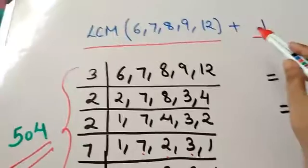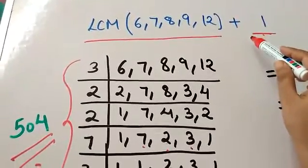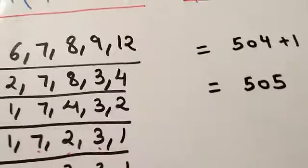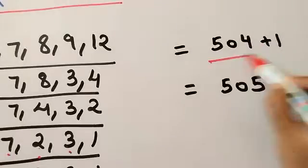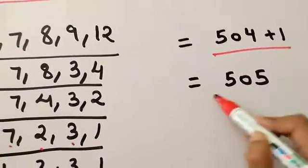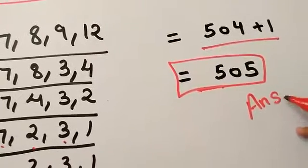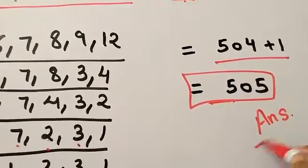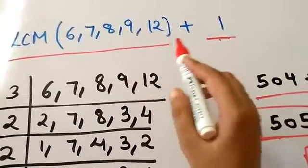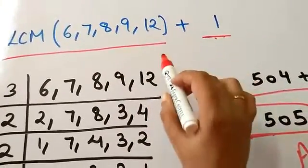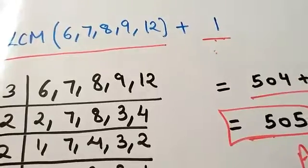Now according to the trick, you should add it with the 1 to get the answer. So 504 plus 1 will be your answer. This is 505, the least number which when divided by 6, 7, 8, 9, and 12 will give the same remainder as 1 in each case.